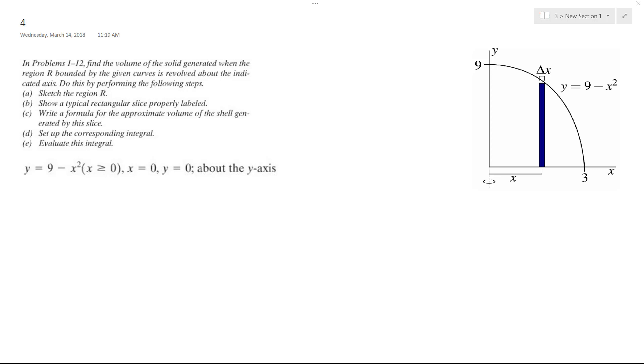So we want to find the area if we wrap around this equation, 9 minus x squared, around the y-axis. So it looks something like this, and then imagine it, it's kind of like a half a circle.